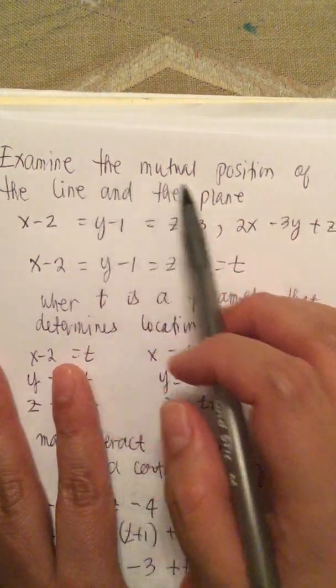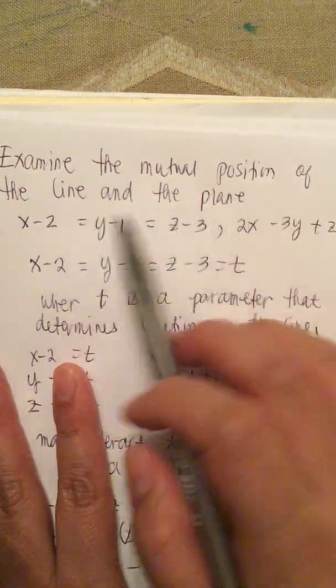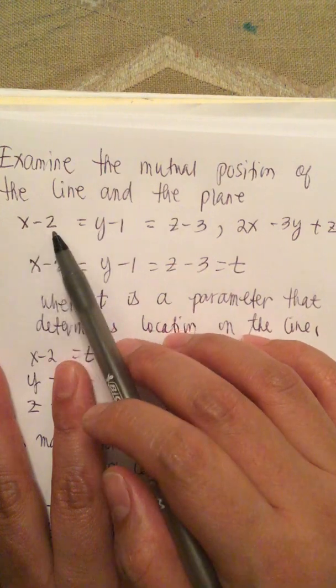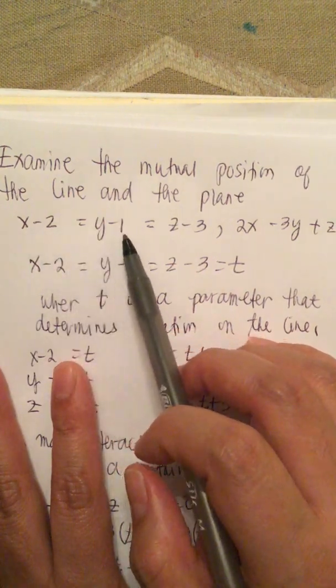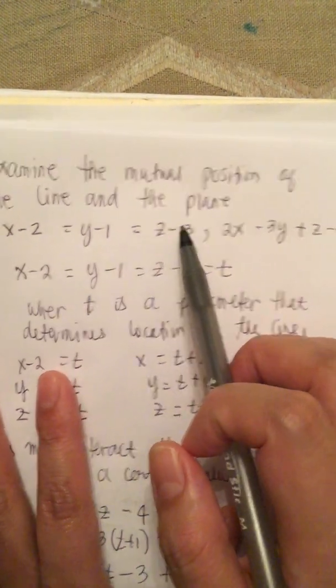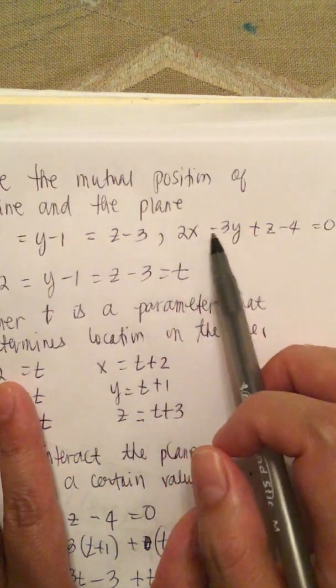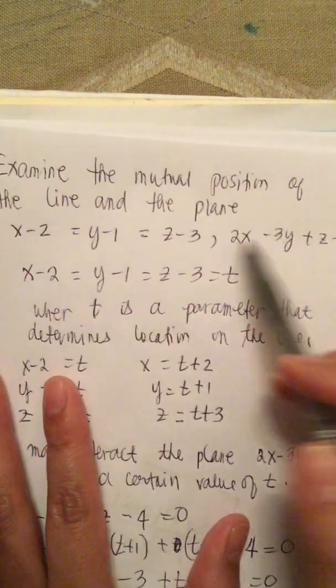Examine the mutual position of the line and the plane. So x minus 2 equals y minus 1 equals z minus 3, and the plane 2x minus 3y plus z minus 4 equals 0.